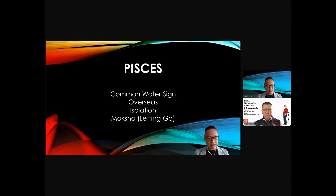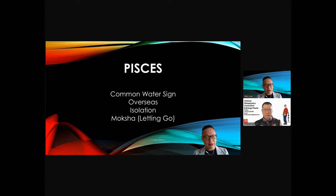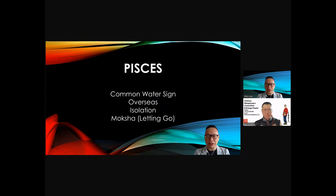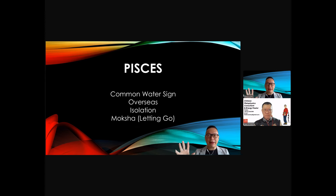Moksha — this is a term which means letting go, letting go of desires. This is the interesting part about Venus. We were talking about Venus being the significator of wealth, money, love, and relationship. But Venus is actually very strong in Pisces, and Pisces talks about moksha — letting go. So there is this gray area: Venus talks about money, but yet you also have to let go.